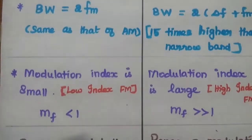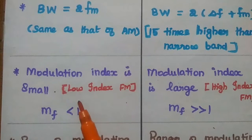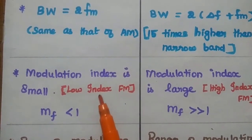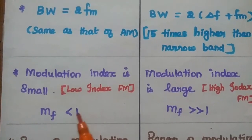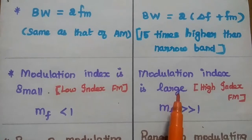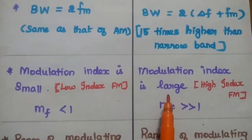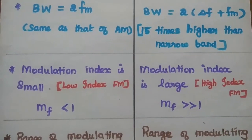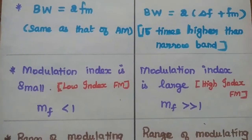The modulation index is very small in the case of narrowband FM. Hence, it is called low index FM, where the modulation index is less than 1. In wideband FM, the modulation index is very large. Hence, it is called high index FM, where the modulation index is far greater than 1.